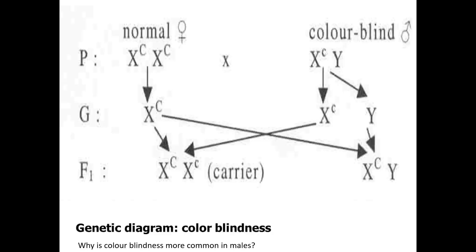Here is an example of a genetic diagram for colour blindness. Using X^C X^c (carrier female) × X^C Y (normal male), it is more common for males to be colour blind. A carrier female can still pass colour blindness to the next generation. From the test cross, there is a 25% chance that a male will be colour blind. Girls are unlikely to be colour blind because 75% carry the dominant allele.